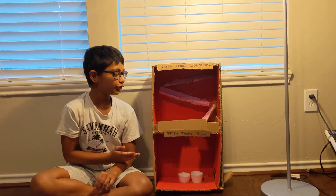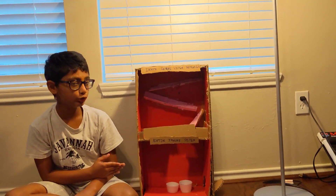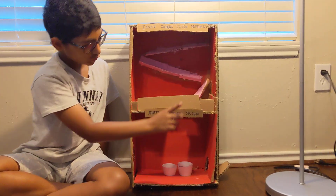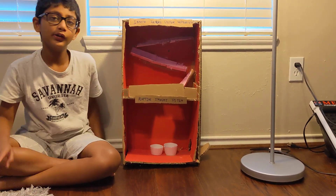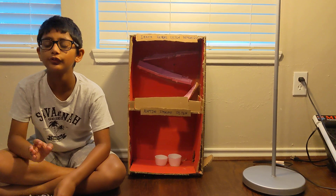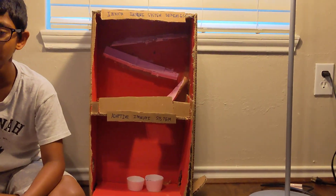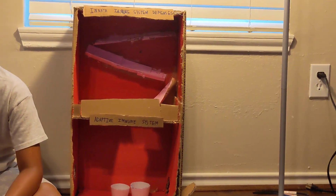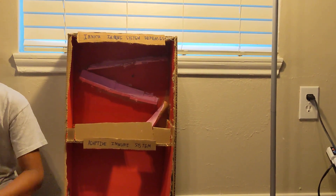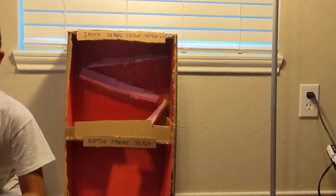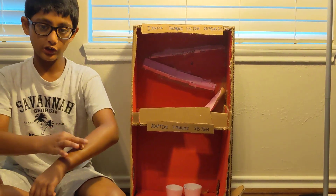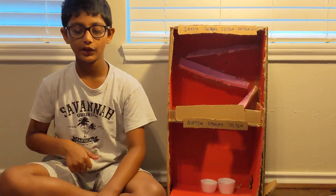This is my model of the immune system. There are two types of the immune system: the innate immune system and the adaptive immune system. The innate immune system is the first barrier of defense against pathogens, also known as germs. The types of barriers in the innate immune system are your skin, your nose, and your stomach acids.